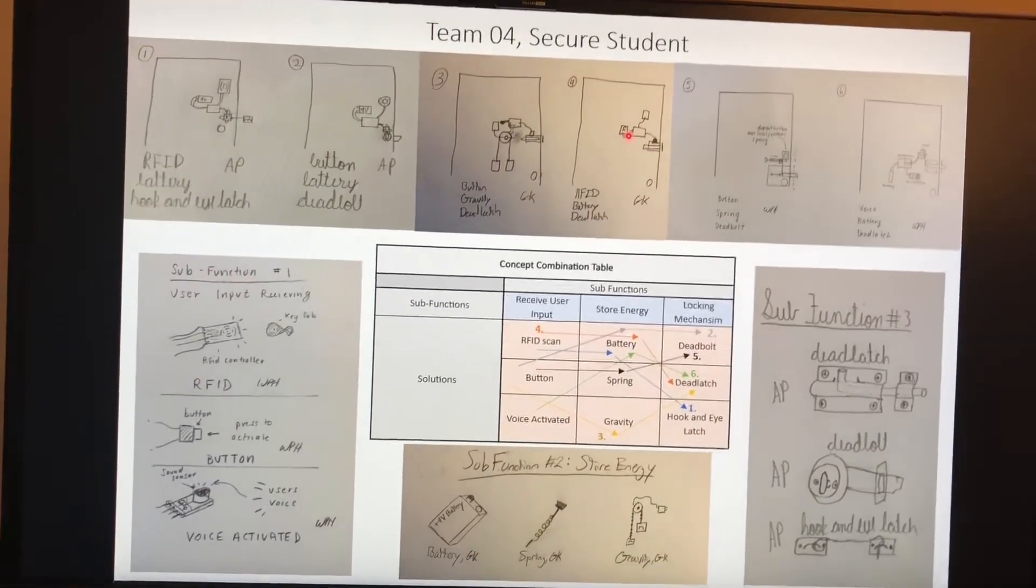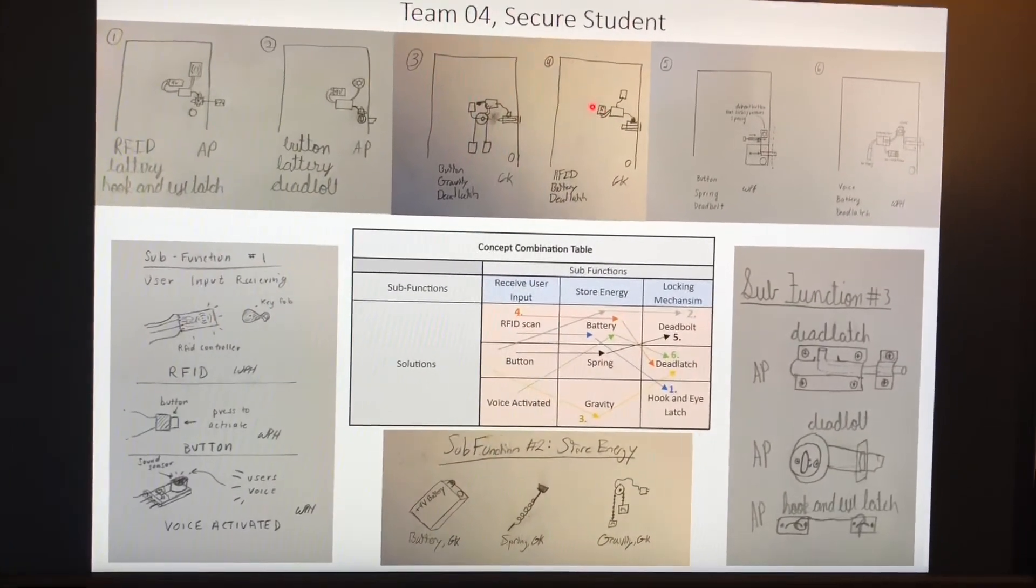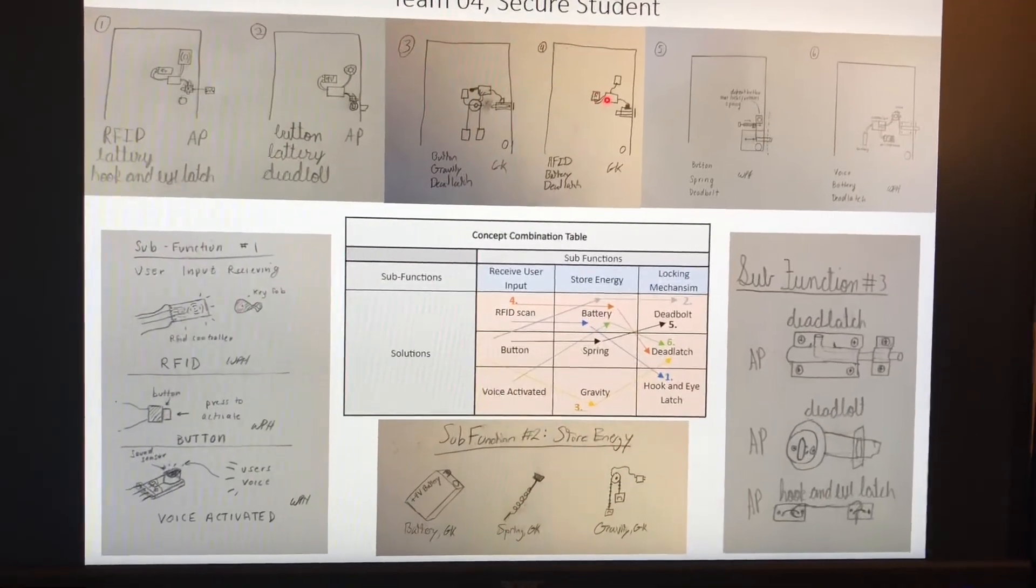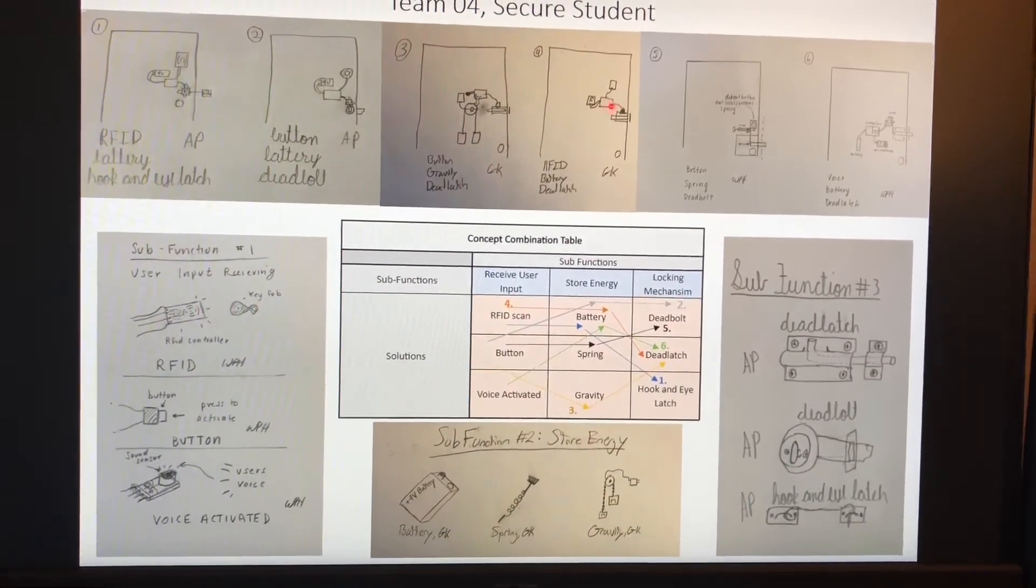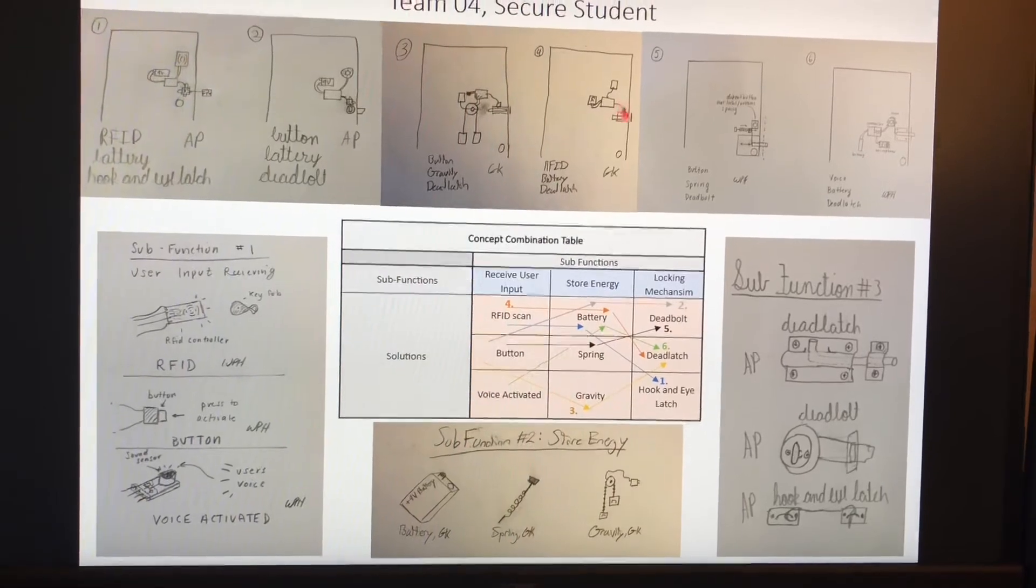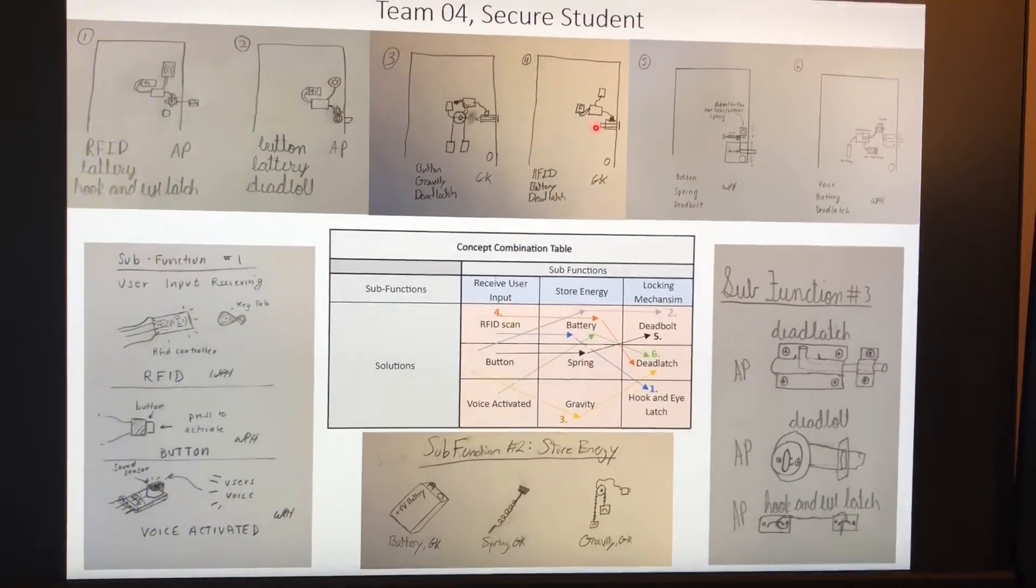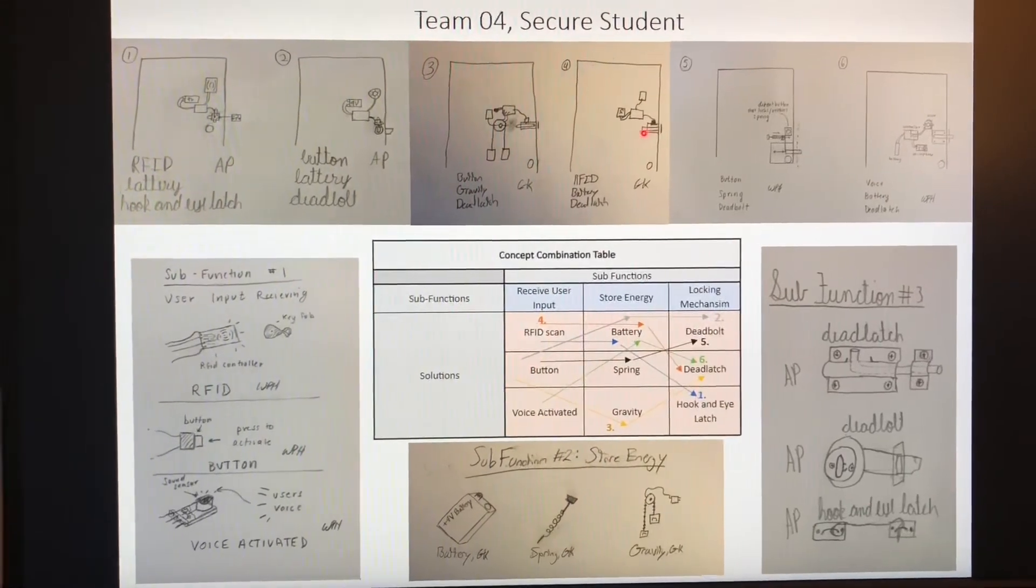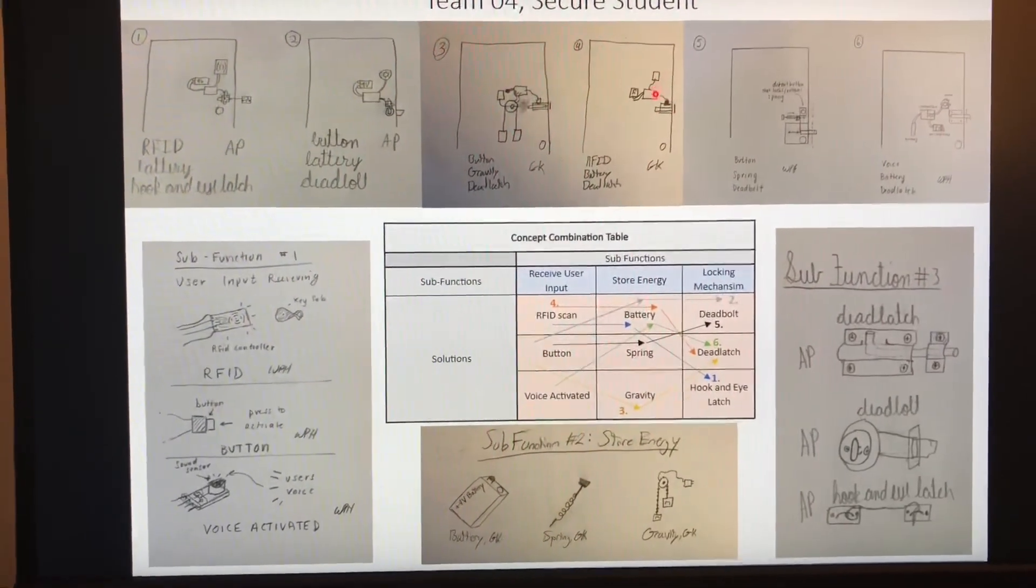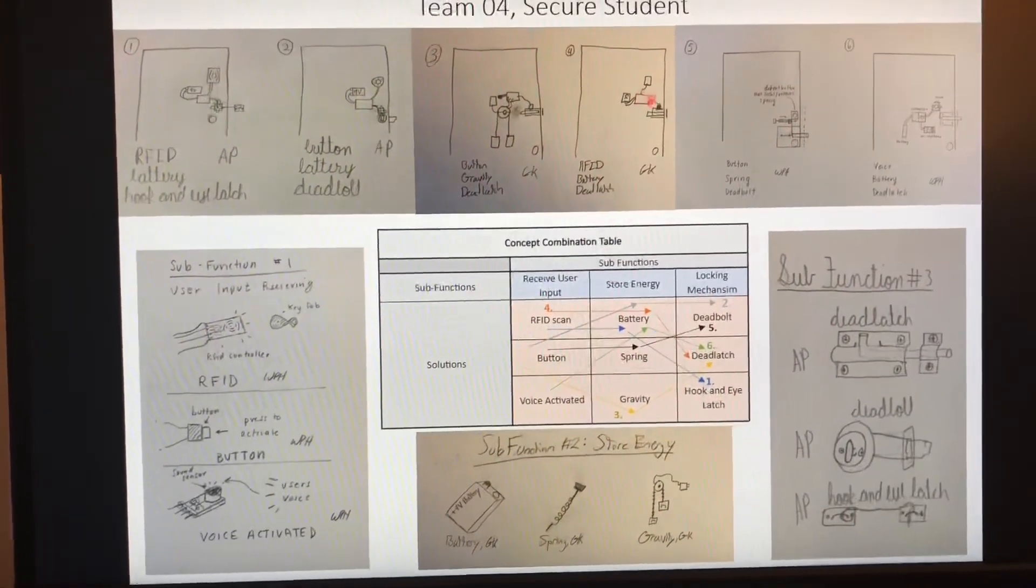So the user would have an RFID card for the RFID pad, and they would scan it here, it would send the code to the Arduino, and it would send it to the motor, again, turning rotational motion into linear to open the horizontal latch. And then, it's all powered by a battery.